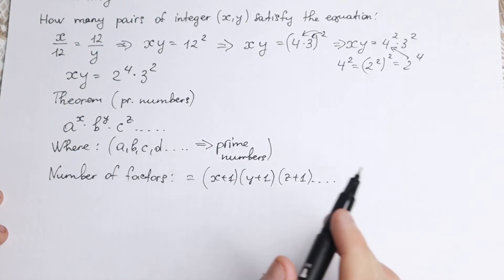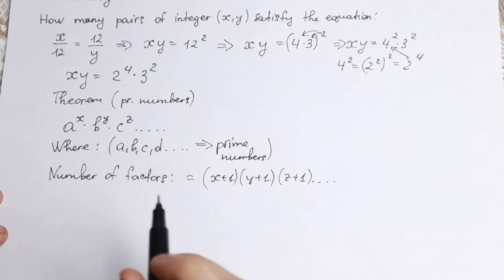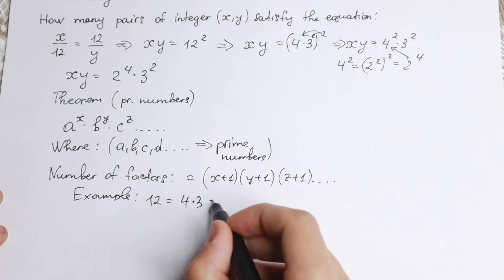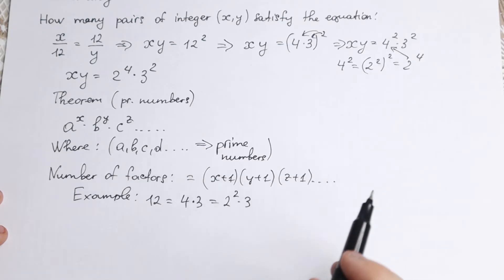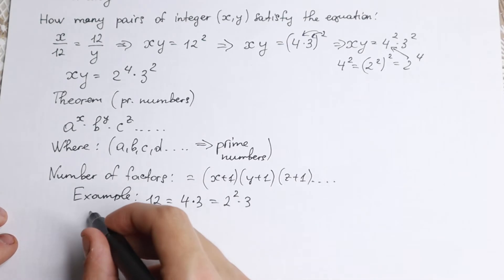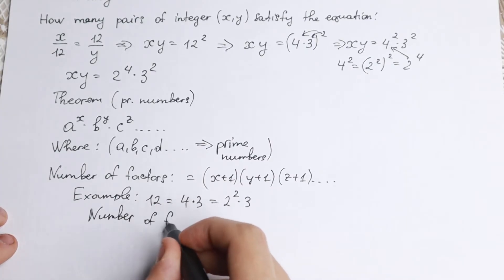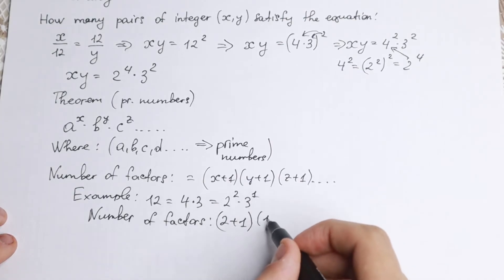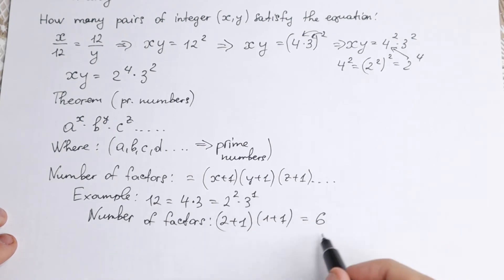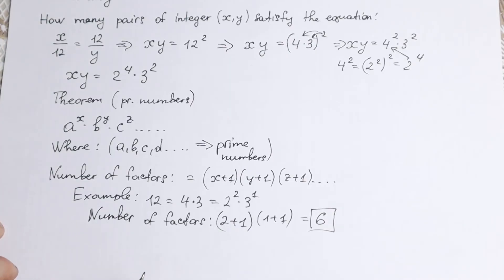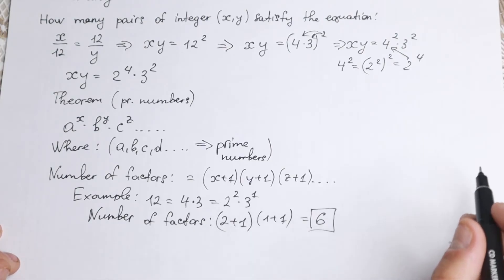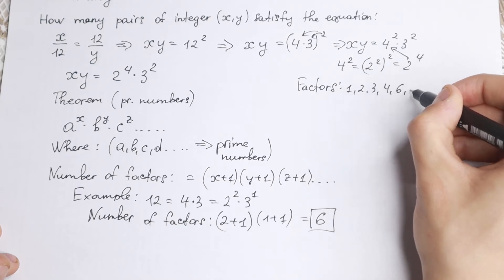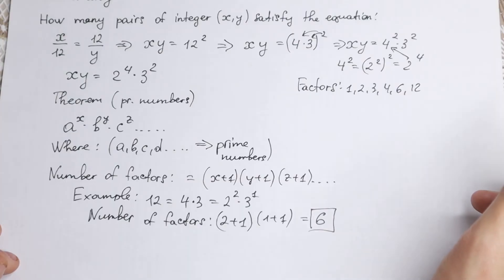Let me show you by example. Take 12: we can write it as 2 squared times 3. Applying the theorem, the number of factors equals (2+1) times (1+1), which is 3 times 2 equals 6. So if we're talking about 12, we have 6 factors. This confirms the theorem works really well.